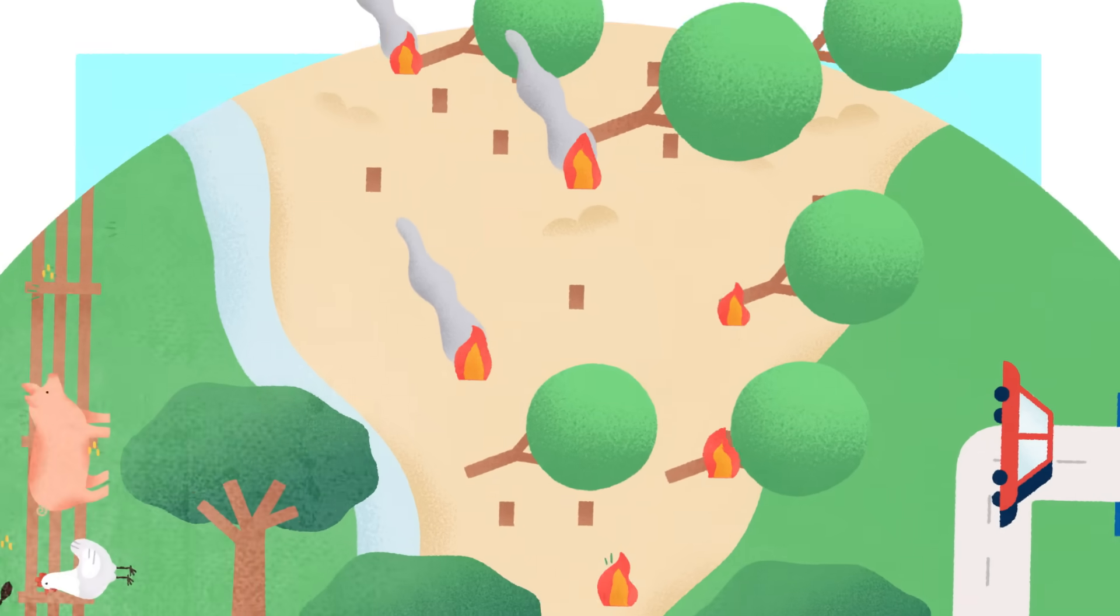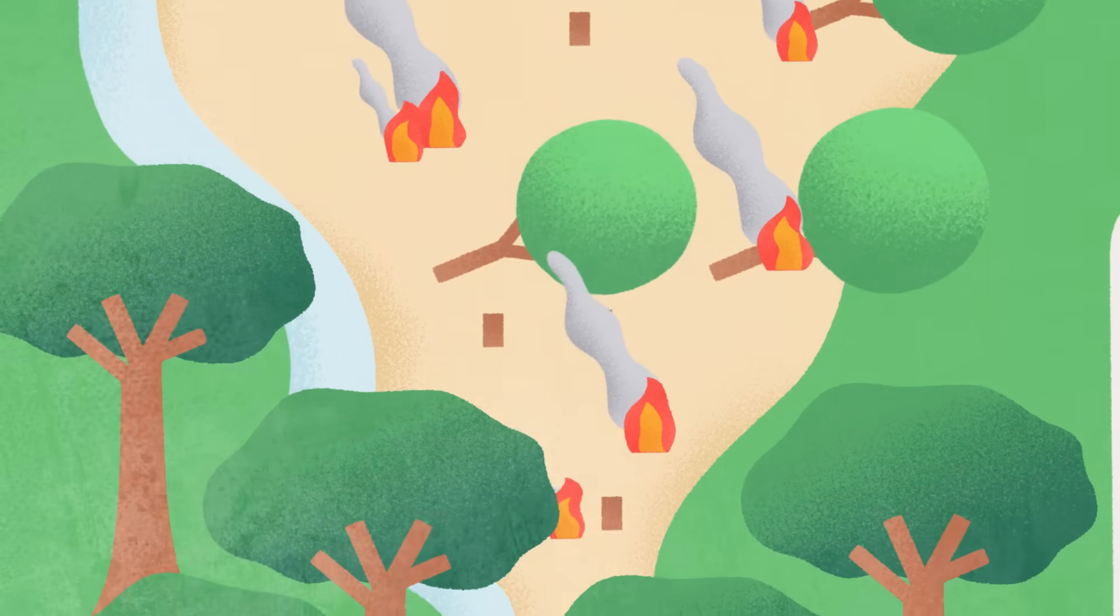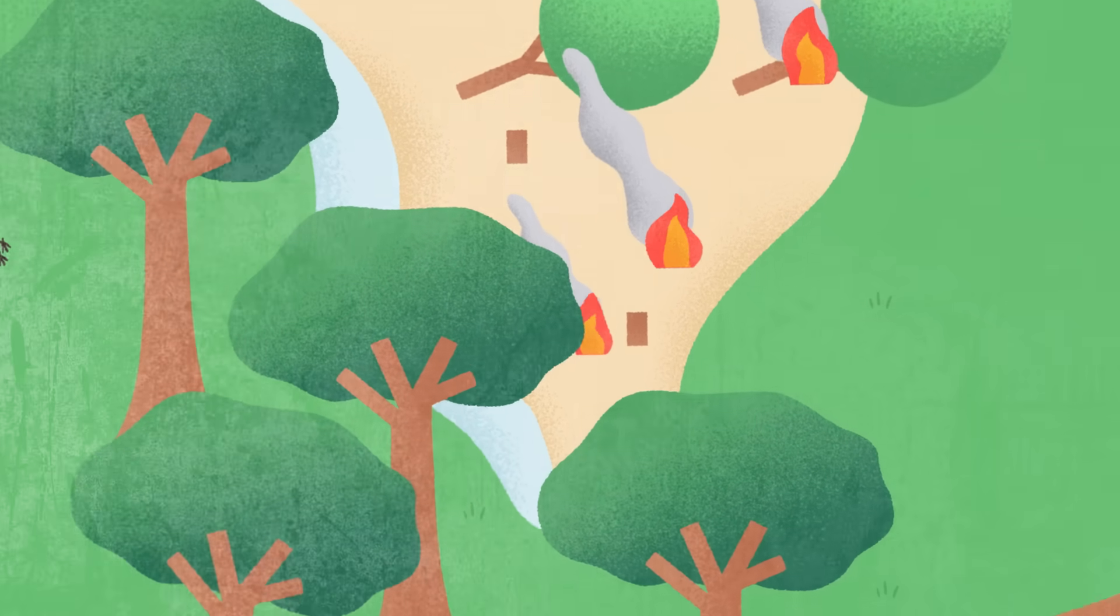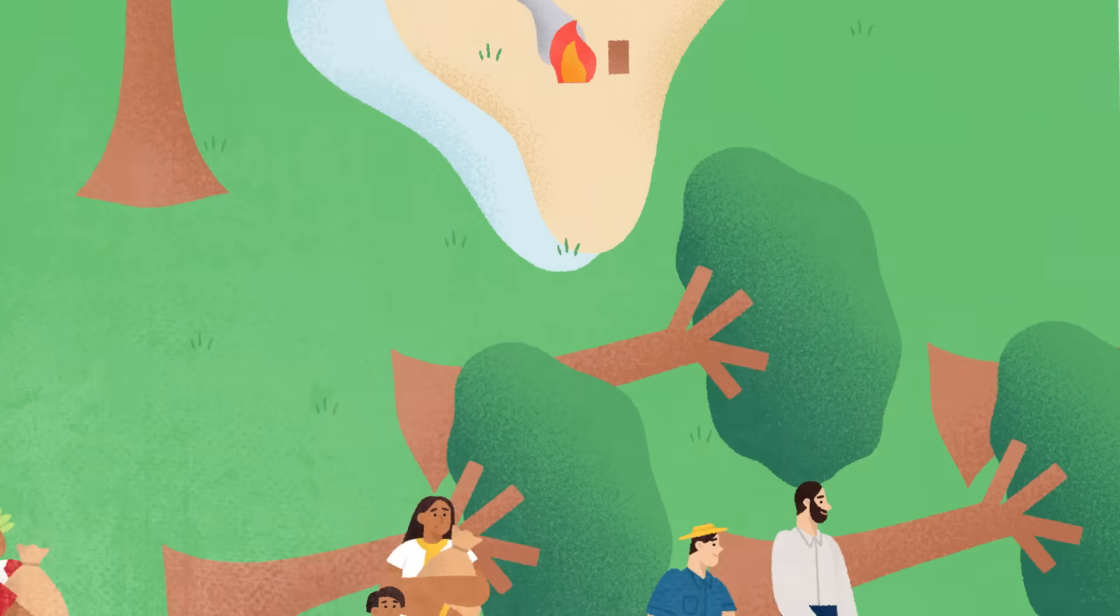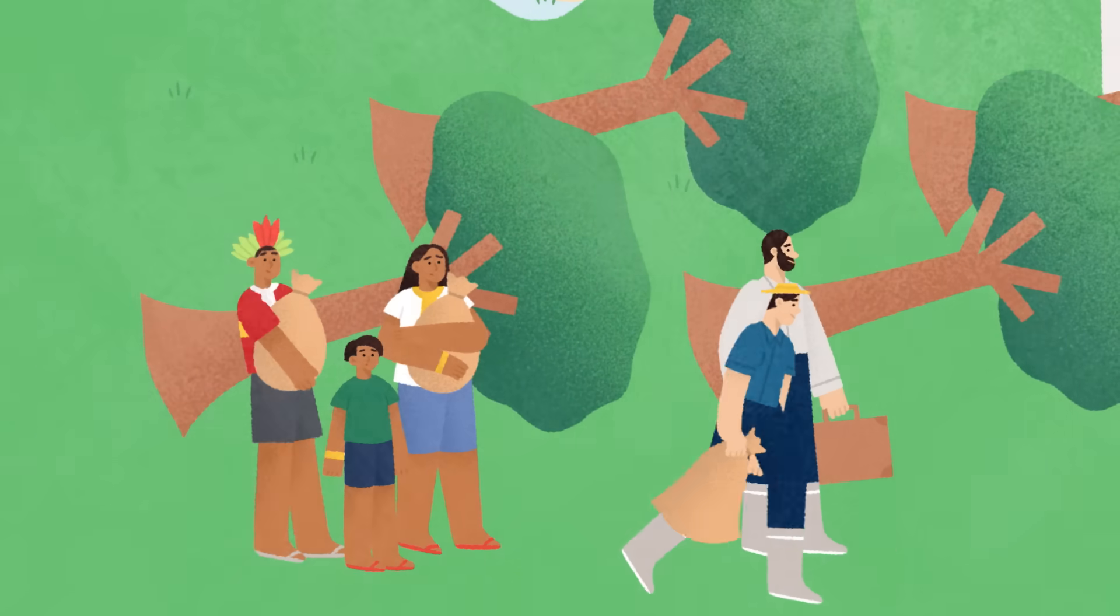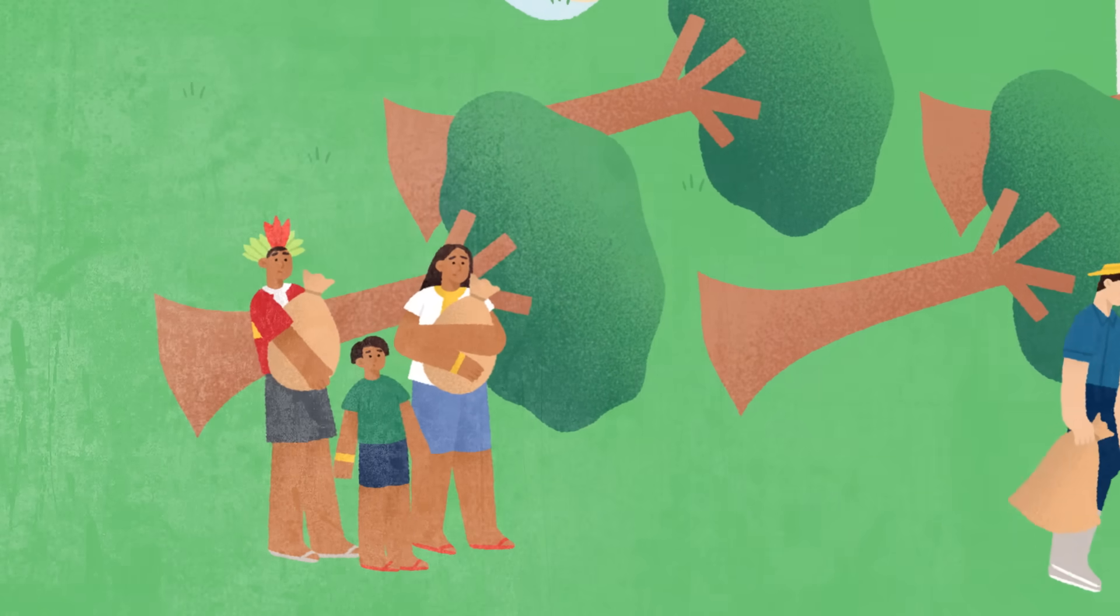Between 2006 and 2017, roughly 22,000 square kilometers of the Amazon were cleared for soy production. In some regions, this has also led to the displacement of farmers and indigenous communities.